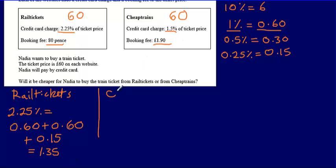Doing exactly the same thing for Cheap Trains. Work out the percentage first. So I've got 1.5%. That's a nice simple one. So 1.5%, I'm just going to add the 1% and the half a percent, the 0.5%. And that's going to be 90p.